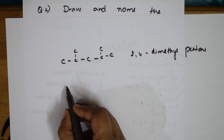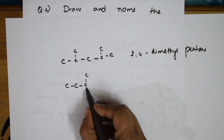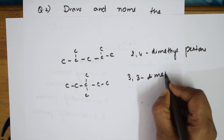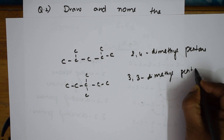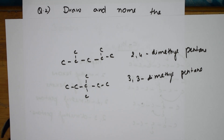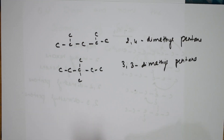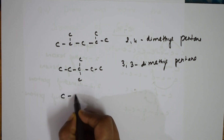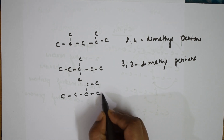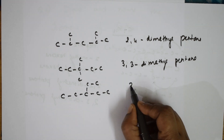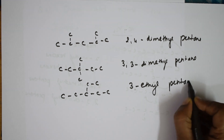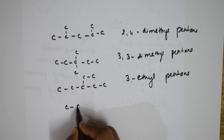One more combination: 1, 3 — look at this — this is 3,3-dimethylpentane. One more possible combination: 1, 2, 3, 3 — yes — this is 3-methylheptane.